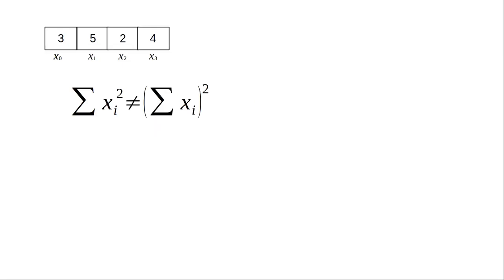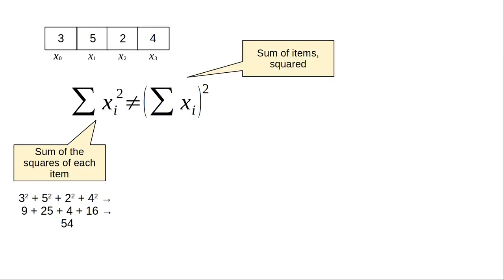Here's something important to note. These are not equivalent. The left side is the total of the squared items, which works out to 54. The right side gets the sum of all the items and squares that result, which works out to 196.